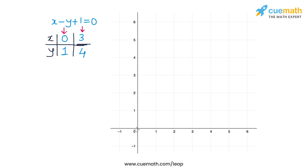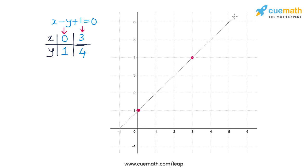So two solutions of the first equation are (0, 1) and (3, 4). The point (0, 1) lies here, and (3, 4) lies on this point. Now I can draw the line through these two points, and this line is the solution line corresponding to the first equation.